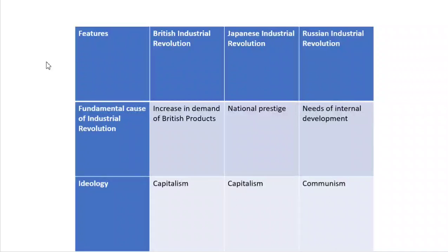In the case of Russia, the fundamental cause of industrial revolution was to meet the needs of internal development — growing aspirations in such a large country with a huge population. Russia later became a supreme power on par with the USA as part of the Cold War. In order to fulfill its needs of internal development, Russia adopted its industrial revolution, particularly after the great Russian Revolution of 1917.